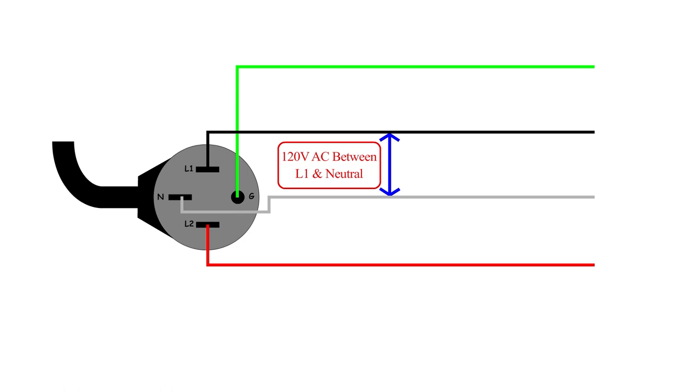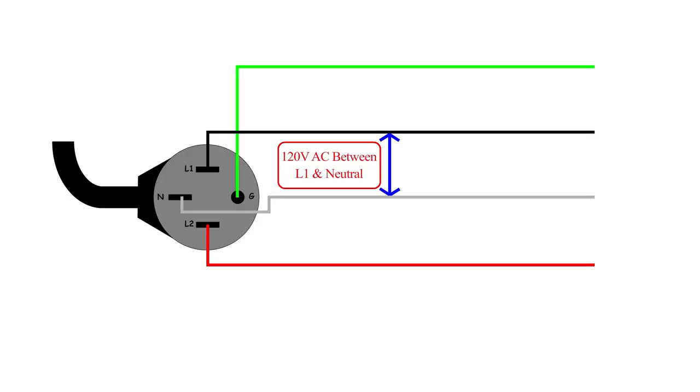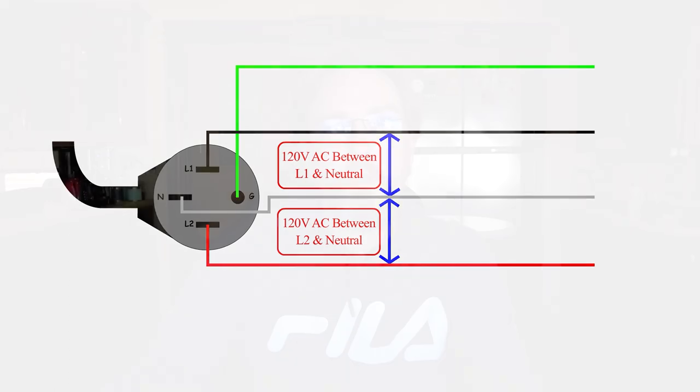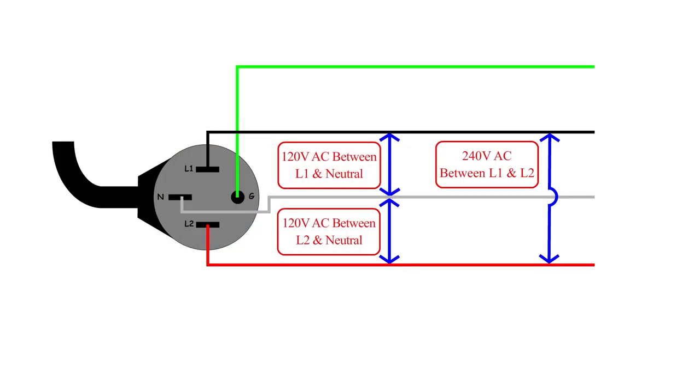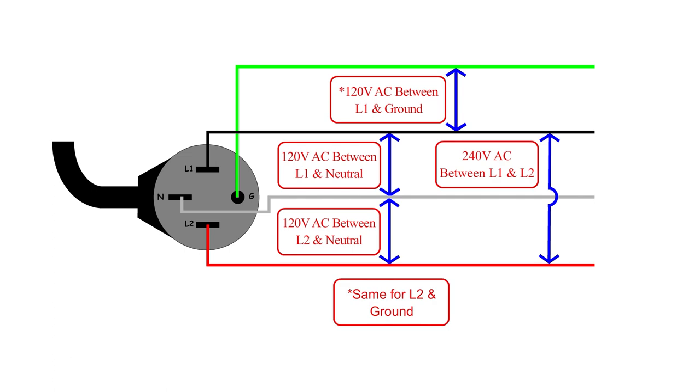Let's look at the voltages developed in the 50-amp system. We have 120 volts from Line 1 to ground — no different than the 30-amp system. Now with the second hot line — L2 — we also develop 120 volts between that line and neutral. Between Line 1 and Line 2, we get 240 volts. Voltages developed between both lines and ground are also 120 volts, but there should never really be any current flow through that ground line.